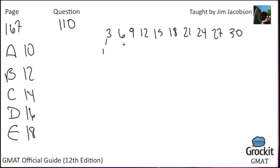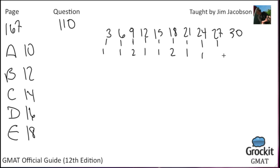In 3: one 3. In 6 (3×2): one 3. In 9 (3×3): two 3s. In 12 (3×4): one 3. In 15 (3×5): one 3. In 18 (3×6, and 6 has another 3): two 3s. In 21 (3×7): one 3. In 24 (3×8): one 3. In 27 (3×9, and 9 is 3×3): three 3s. In 30 (3×10): one 3. Adding up: 1+1+2+1+1+2+1+1+3+1 equals 14, answer choice C.